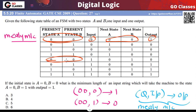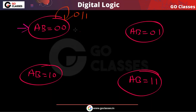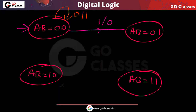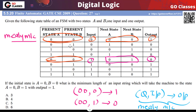In state 0,0, if the input is 1, then the output will be 0 and you will go to state 0,1. So this is how you build the state diagram transitions from state 0,0.